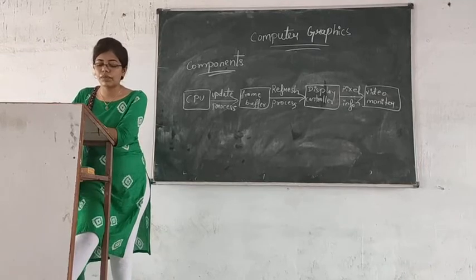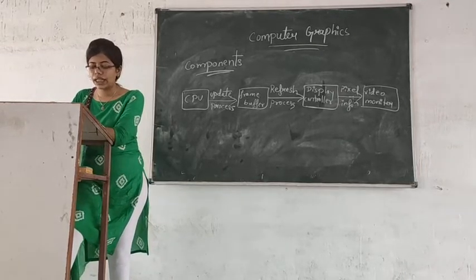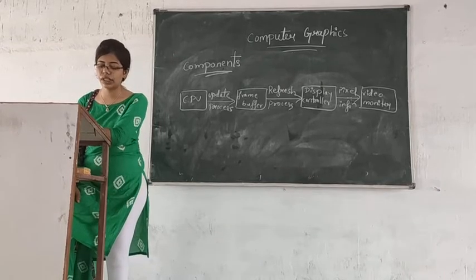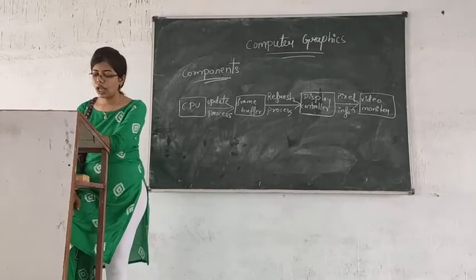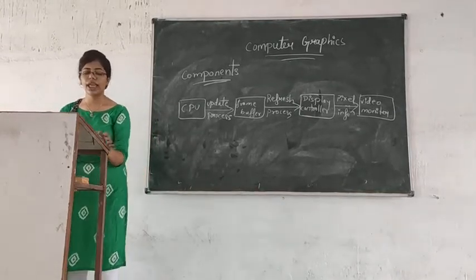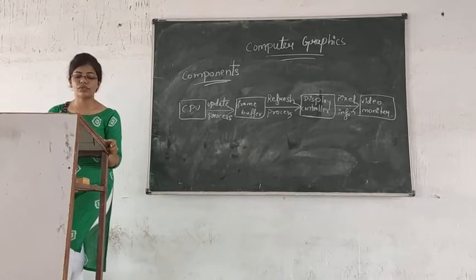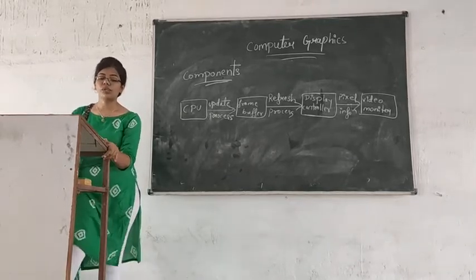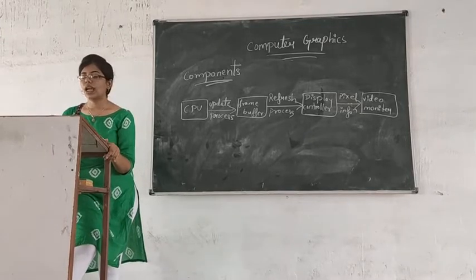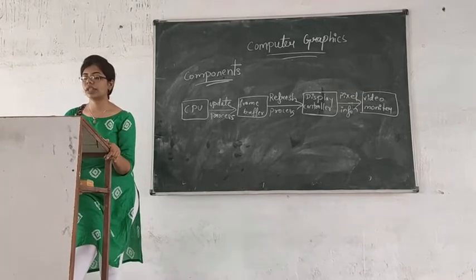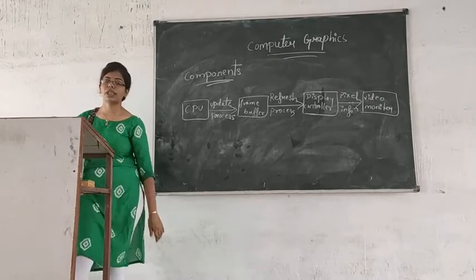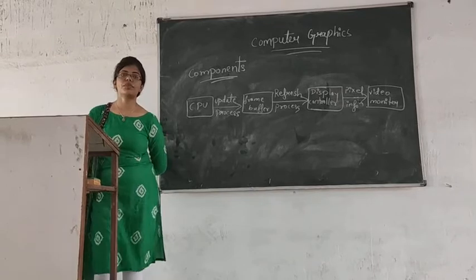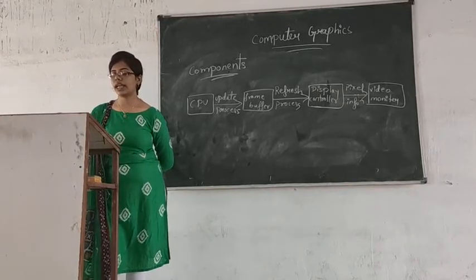In computer graphics it is possible to produce animation. We can use the animation screen control to describe geometric views or scenes as a sequence. Computer graphics tools can also be used to control motion and dynamics, so we can move an object from one position to another.